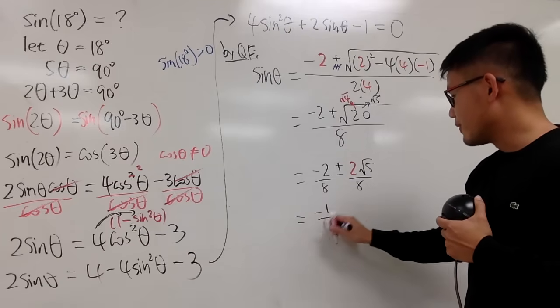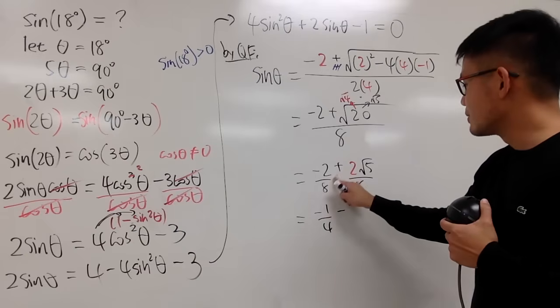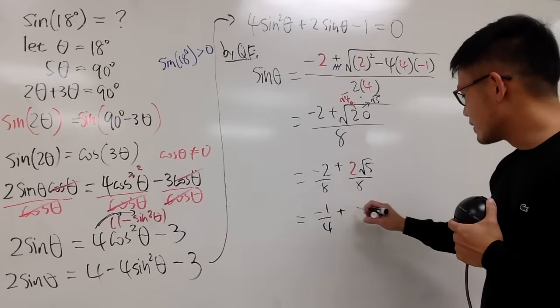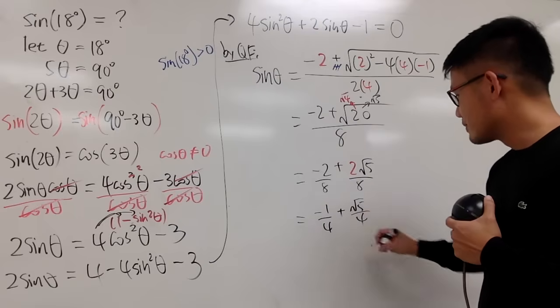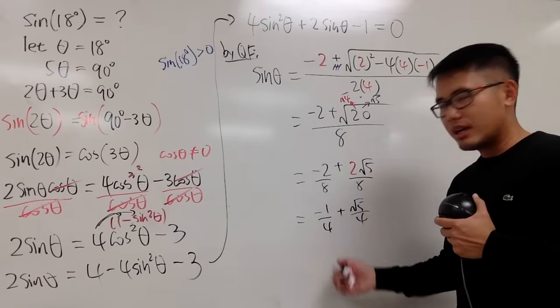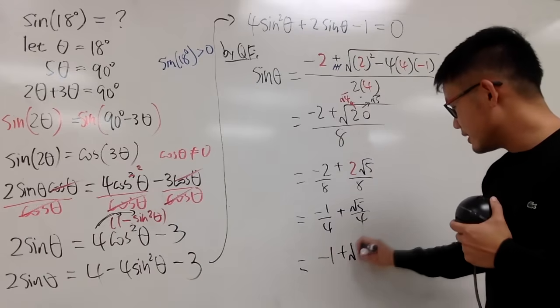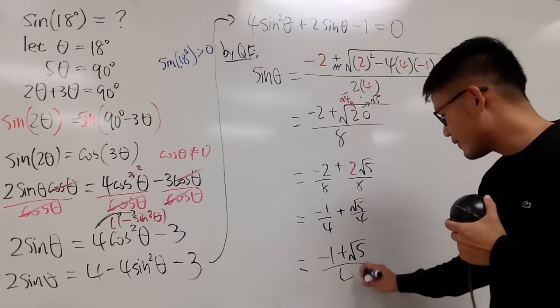This is negative 1 over 4 plus, oh no, just plus. Just plus, right? No more minus. This is square root of 5 over 4. Of course, you can put them together, if you like. And negative 1 plus square root of 5 over 4.